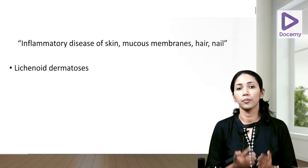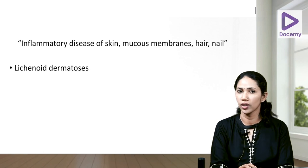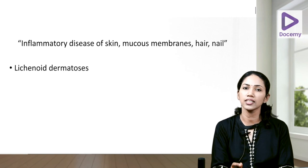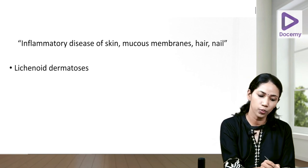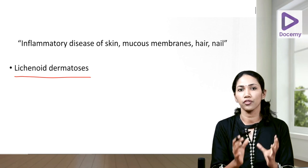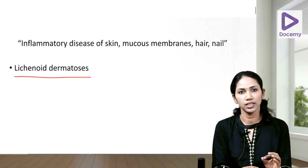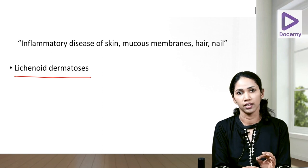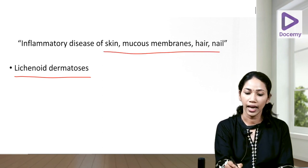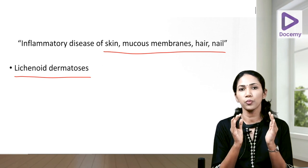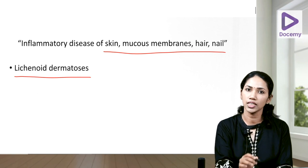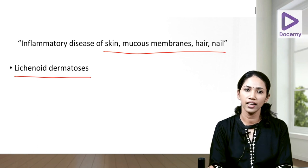We place lichen planus under a broad category called lichenoid dermatosis. In fact, lichen planus is the prototype of this group of diseases. It is an inflammatory disease affecting not just the skin, but also the mucosa, the hair, and the nails.